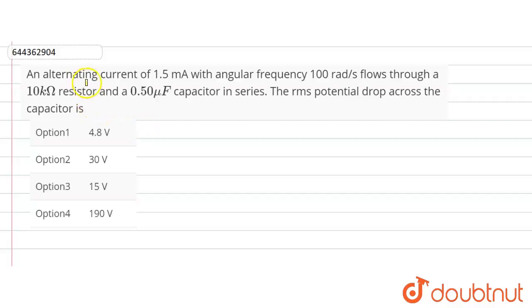Hello friends, the question is given here: An alternating current of 1.5 mA with angular frequency omega equals 100 radian per second flows through a 10 kilo ohm resistor and 0.50 micro farad capacitor in series.